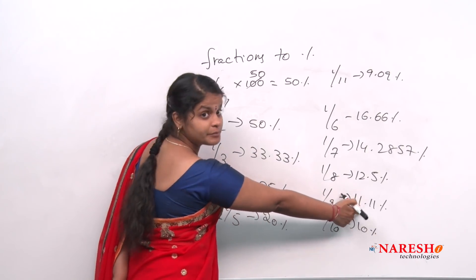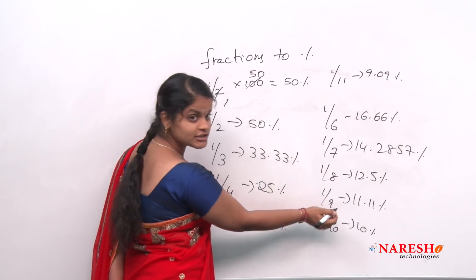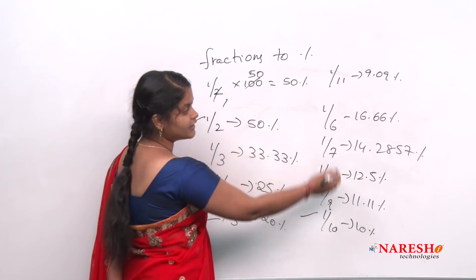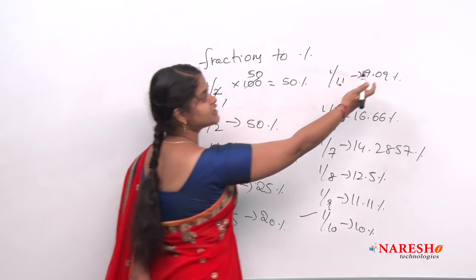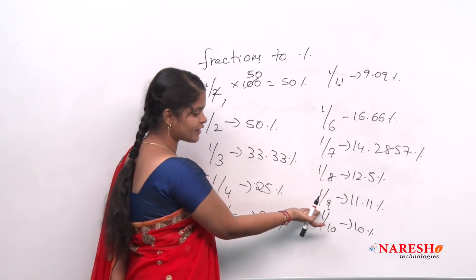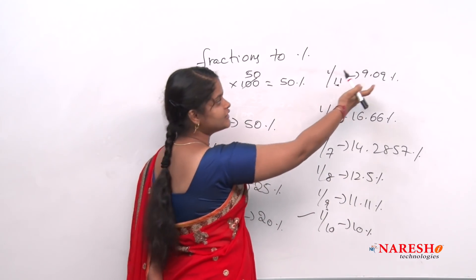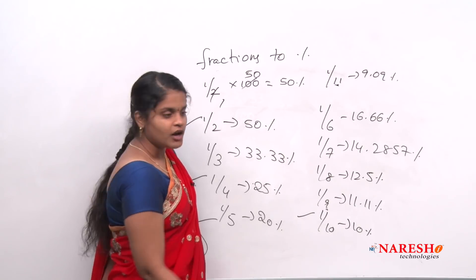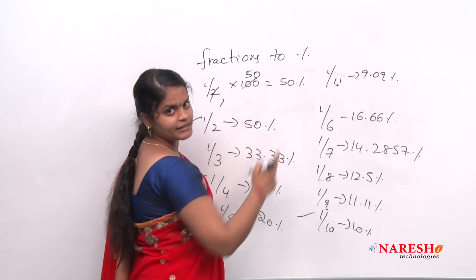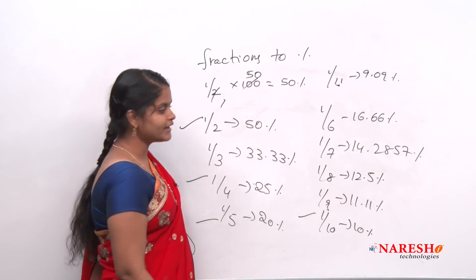1/9 is 11.11. If it is 9 in the denominator, you will get 11. If it is 11 in the denominator, you will get 9. See, if it is 1/9, 11.11. If it is 1/11, 9.09. So 9 and 11 are just reverse.